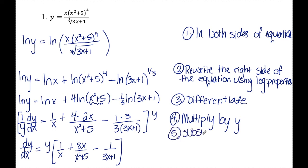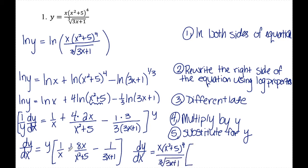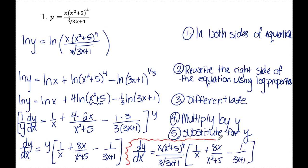Step five is to substitute back in for y. Since the original equation was in terms of x, dy/dx equals x·(x² + 5)⁴ over the cube root of (3x + 1), times the quantity 1/x plus 8x/(x² + 5) minus 1/(3x + 1). That is the final answer. It's messy, but still easier than using product, chain, and quotient rules from scratch.